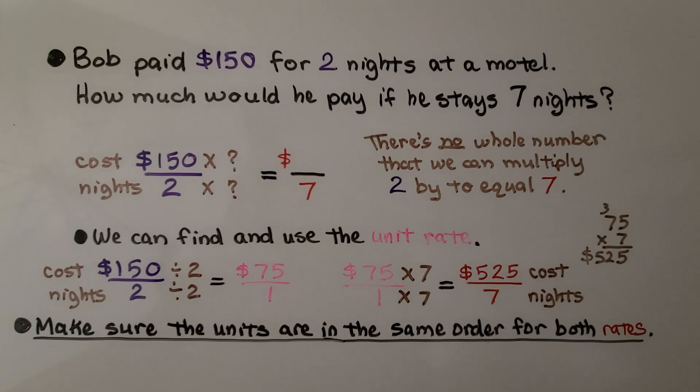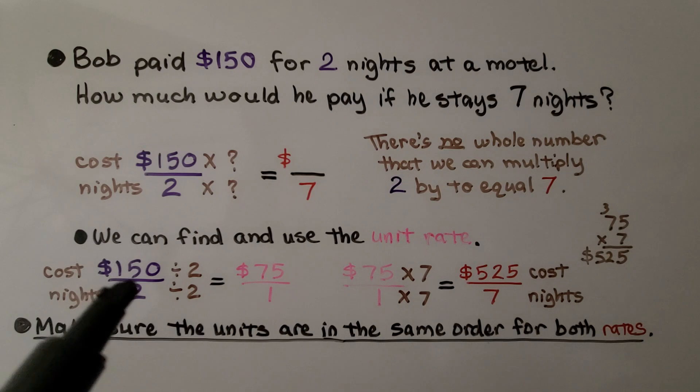We need to make sure that the units are in the same order for both rates. If this is the cost, and that's the nights, then this has to be the cost, and this has to be the nights.